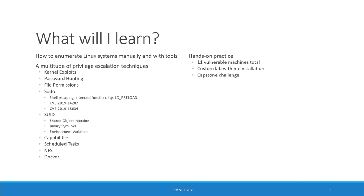Let's talk about what you're going to learn. The big thing is we're going to learn how to enumerate Linux systems manually and then with tools. Enumeration is the biggest and most important part of hacking — the better you are at enumeration, the better hacker you're going to be. We'll go through escalation techniques including kernel exploits, password hunting, file permissions, several sudo exploits including recent CVEs from 2019, SUID attacks, capabilities attacks, NFS, scheduled tasks being cron jobs and systemd timers, and a Docker privilege escalation exploit.